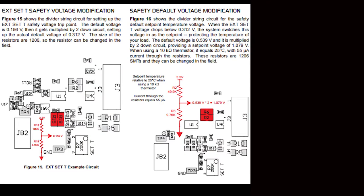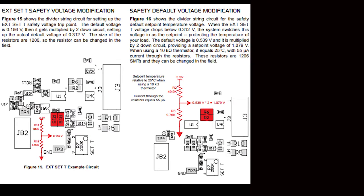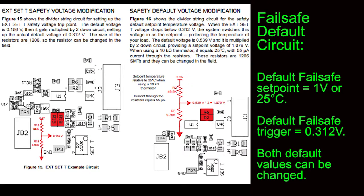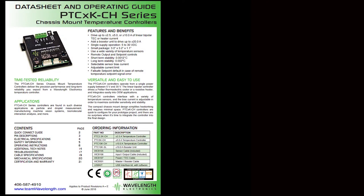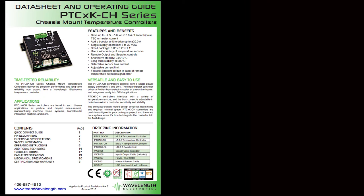If you're using an external setpoint, the PTC has an extra fail-safe default circuit to make the setpoint 1 volt if the external setpoint signal is lost. That way, the system doesn't drive the load to extreme high or low temperatures. The default trigger point is 0.312 volts. Both the trigger point and the safety setpoint can be changed. More information on adaptations is available in the additional technical information section of the datasheet.